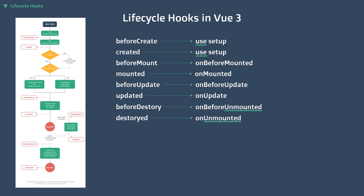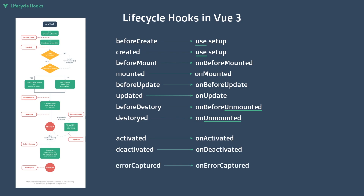Moving forward, there are three functions from Vue 2 that are not covered in this diagram. The first hook is called activated, which is triggered when a keep-alive component is toggled on. Likewise, there is deactivated, which is called when the component is toggled off. And for the last of the Vue 2 events, there is onErrorCaptured, which is called when one of the descendant components throws an error.